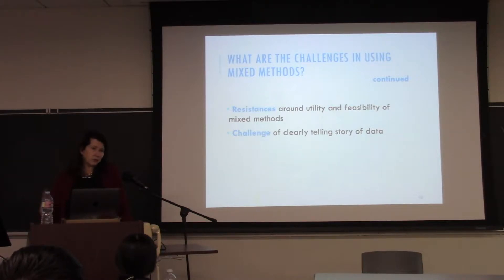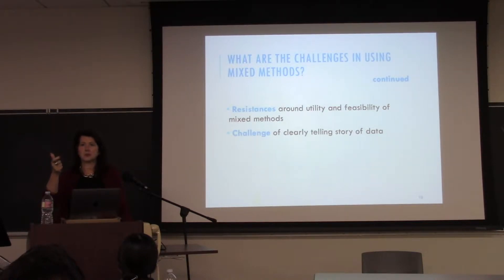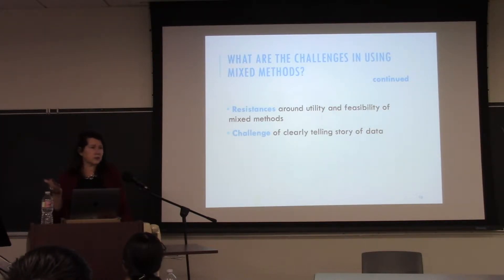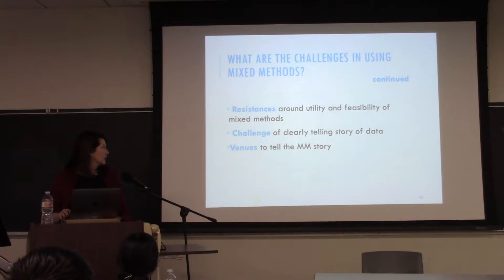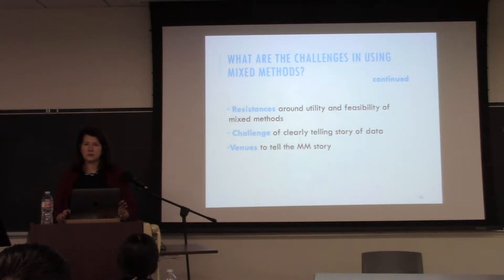Another challenge is complexity — you have double the story to tell. You need a method section for the quantitative evidence and a method section for the qualitative, and you have to show how the two pieces speak to each other. The same applies to the analysis section. There are word limits. And when reviewers have never seen this before, they don't know how to judge it. There are also limited journals that publish mixed methods work.